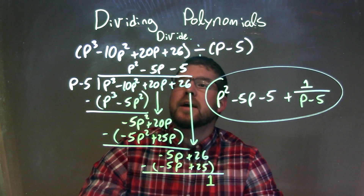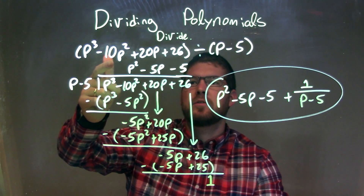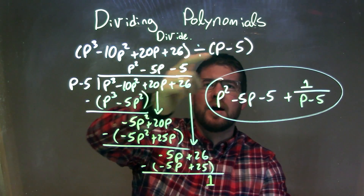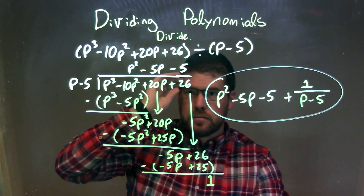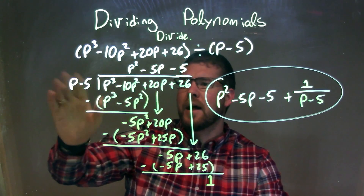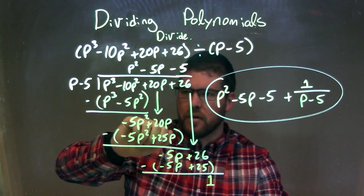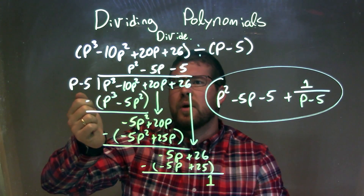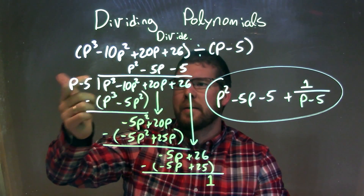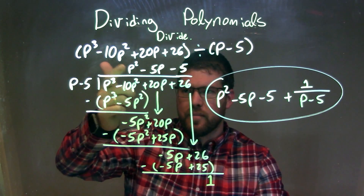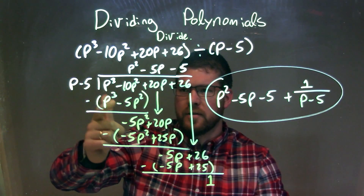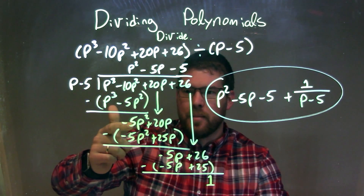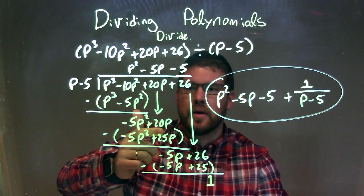So let's recap. We were given p to the third minus 10p squared plus 20p plus 26 divided by p minus 5. I wrote it out in long division form. Then I asked: what times p gave me p to the third? It's p squared. I multiplied it to both parts and got p to the third minus 5p squared. So I subtracted them and got minus 5p squared. Brought down the 20p.